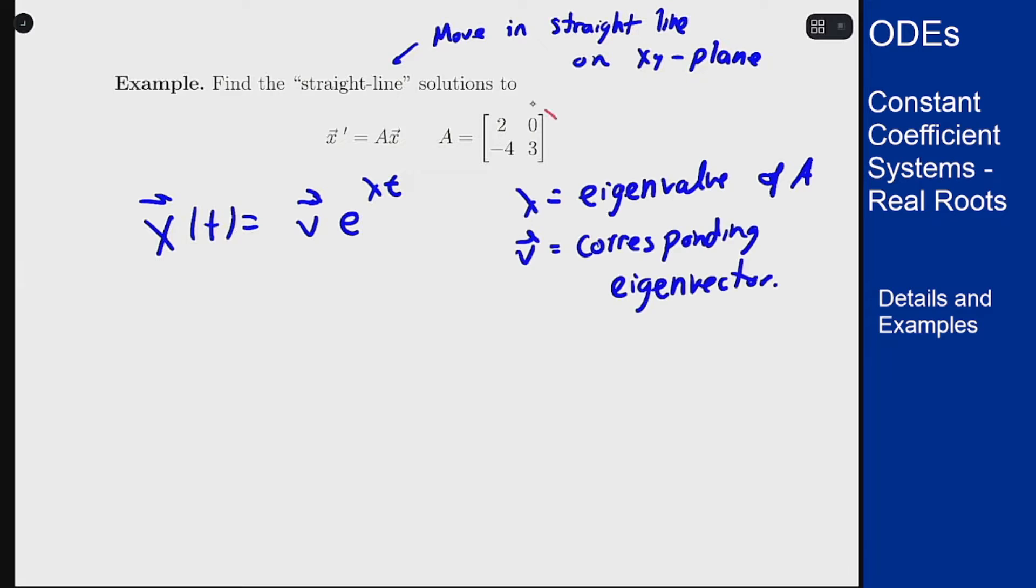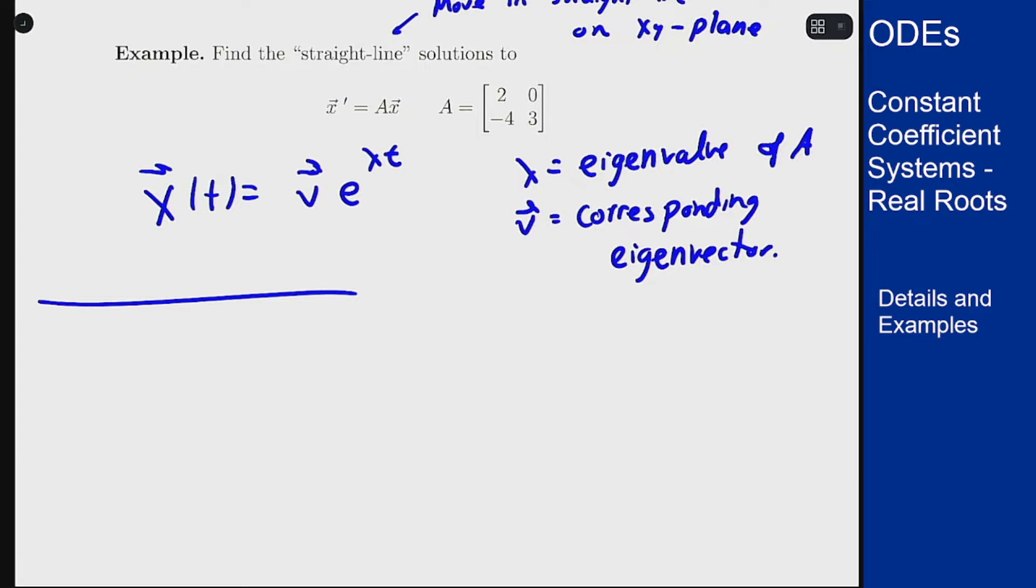Now we have to analyze this matrix A to find those eigenvalues and eigenvectors. To do that we look at the determinant of A minus lambda I, which will be the determinant of 2 minus lambda, 0, minus 4, 3 minus lambda. This is 2 minus lambda times 3 minus lambda minus 0. The eigenvalues here are 2 and 3.